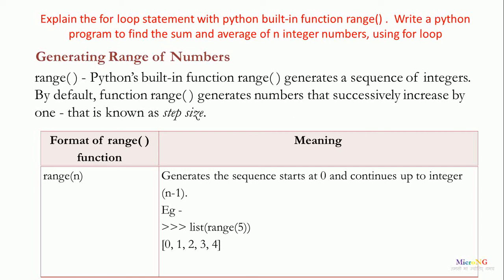The first format is the range method with a single parameter n. It will generate a sequence of integer numbers starting from 0 and continuing up to integer n-1. For example, list(range(5)) will display a list of elements from range(5), which generates integer numbers starting from 0 up to 4. So the output will be a list consisting of 0, 1, 2, 3, and 4.